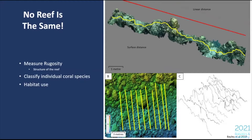No reef is the same. Looking at this close-up 3D image of a reef, we can see it isn't flat — it has bumps, curves, and some flat areas. Measuring this bumpiness or complexity is called rugosity. Because the reef is made up of corals that can look different and be in different positions, no two reefs are the same.